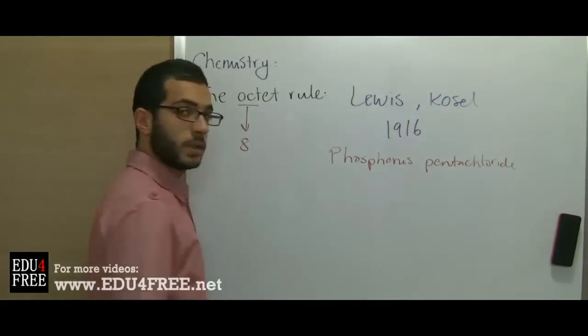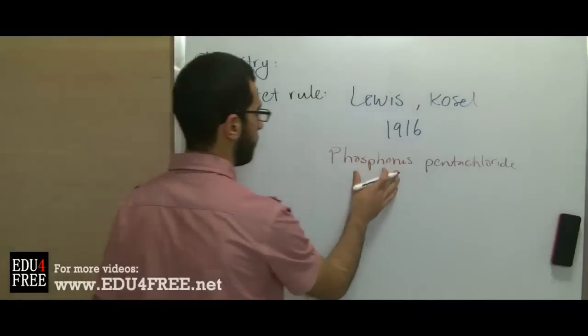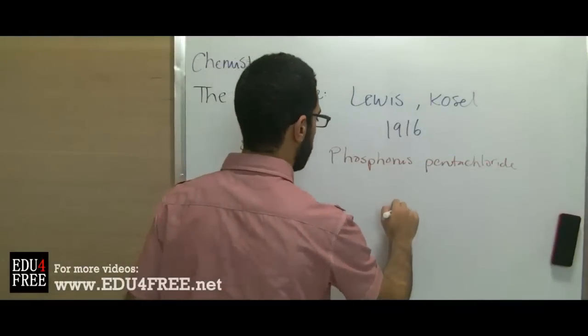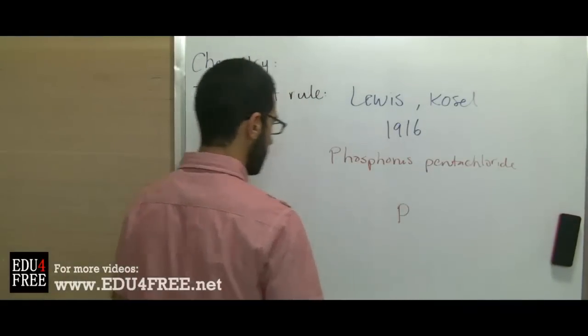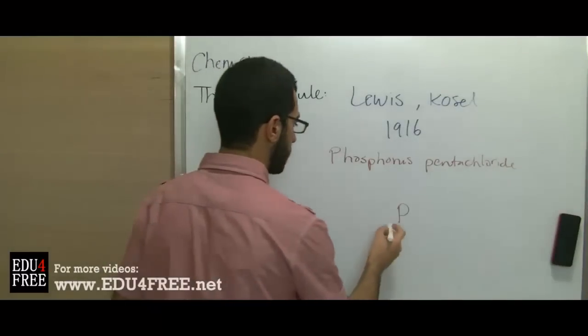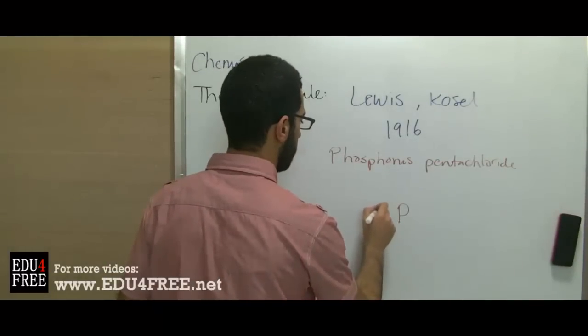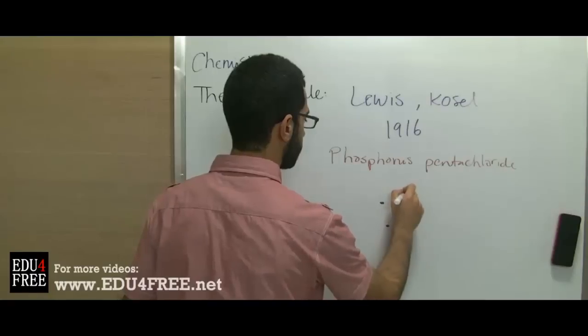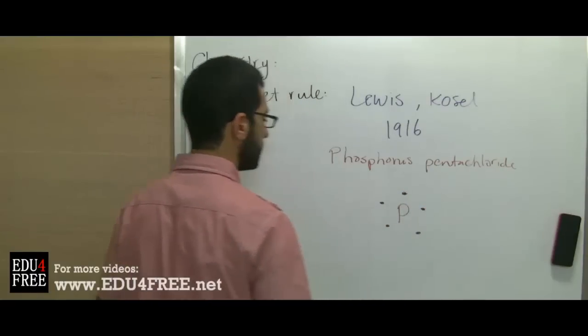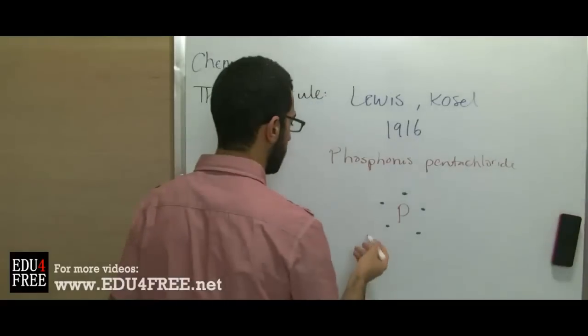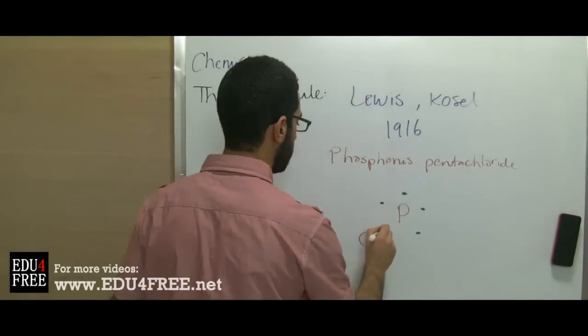There are 10 electrons in the outermost energy level of phosphorous. Phosphorous shares 5 electrons and each chlorine molecule shares an electron.